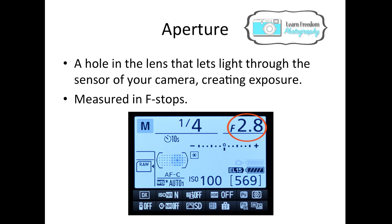Now we're going to move on to aperture. Aperture is a hole in the lens that lets light through the sensor of your camera. This creates exposure and it is measured in f-stops. It's been circled here — it's f/2.8. That is your aperture setting and that is how much light is being let through your camera.